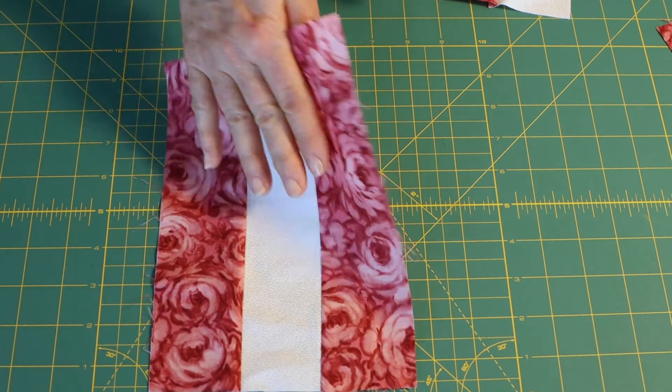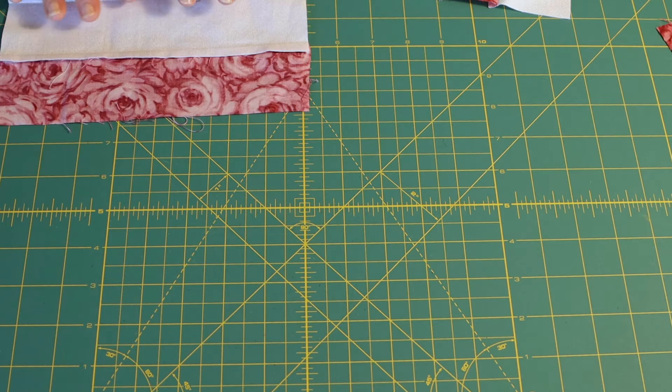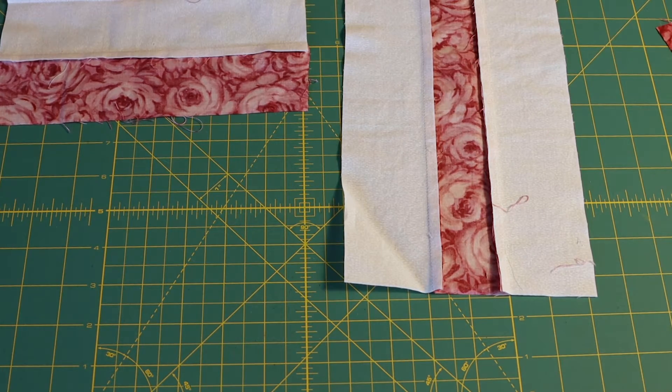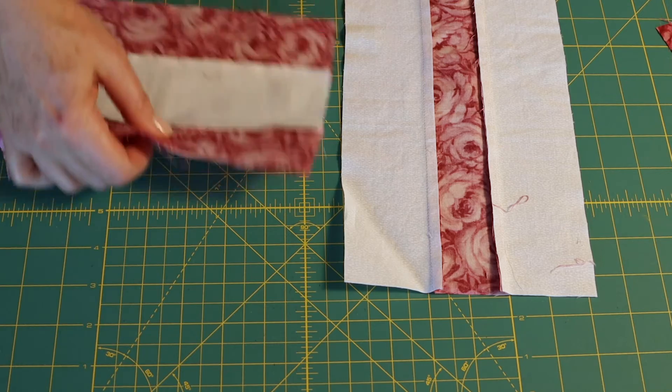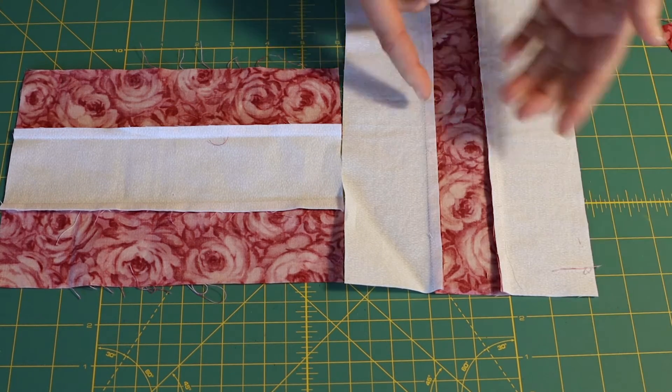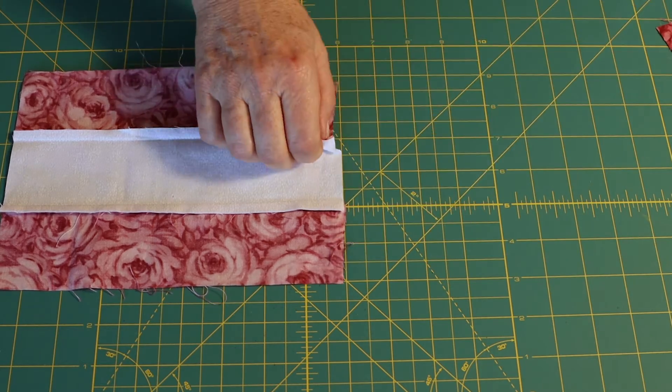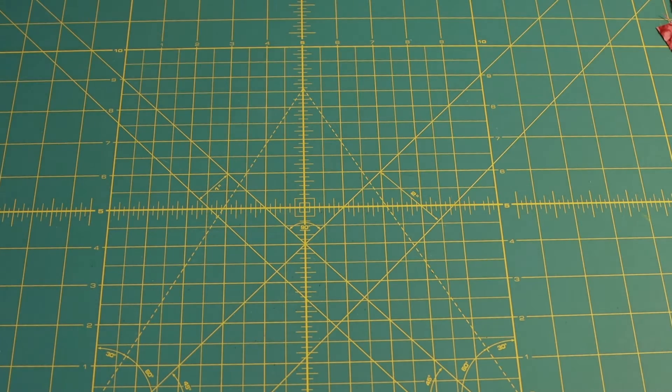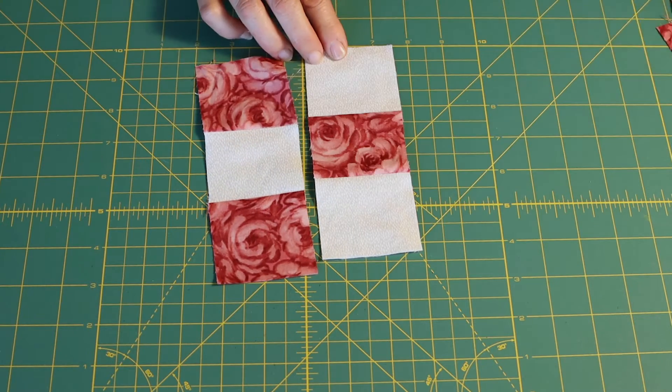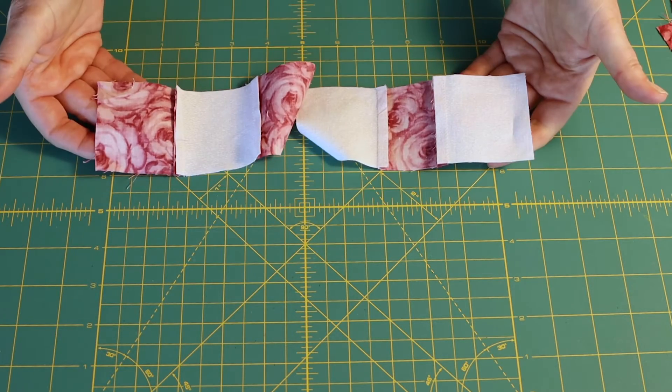What you most often will do then is press the seams in two different directions. See, here the middle one is pressed to the outside, and here the middle ones are pressed to the inside. When you cut those up, you end up with two pieces like this, and there's your seams.